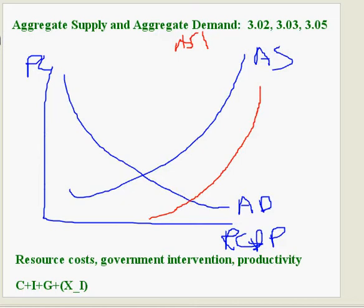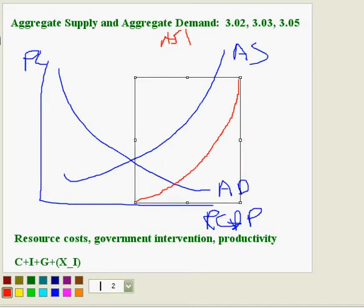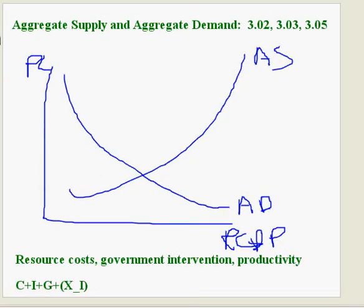So basically any of those things — resource costs, government intervention, productivity — and when we talk about environmental, it could be that we have a particularly long growing season. Well, that is actually going to increase productivity. The lesson gives you some very specific things that affect each of those.